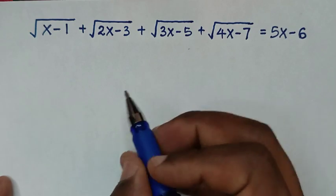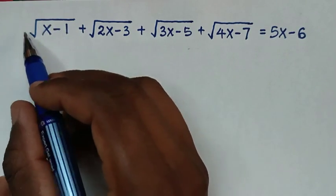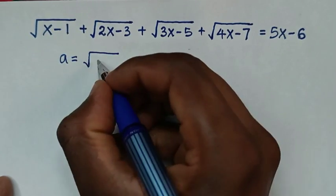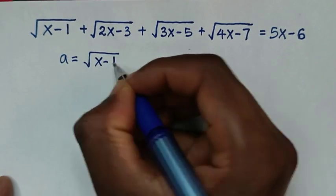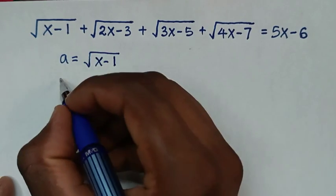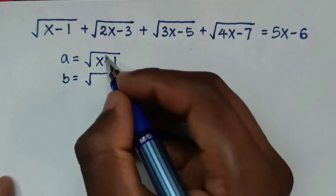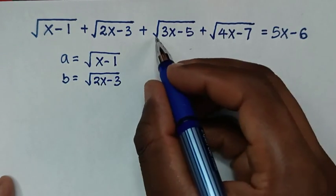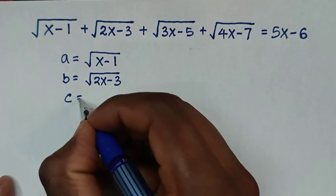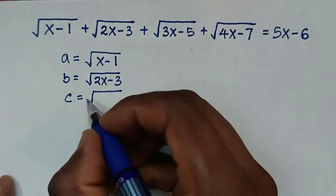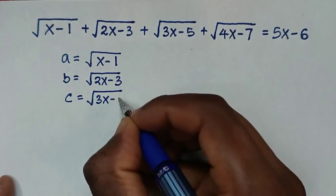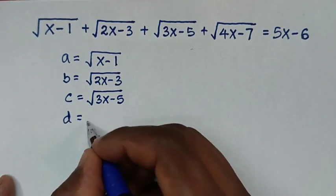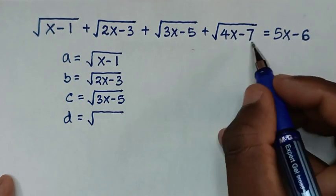In the first step, we will let this square root equal a, so a equals the square root of x minus 1. This square root we let equal b, so b equals the square root of 2x minus 3. This square root we let equal c, so c equals the square root of 3x minus 5. And this we let equal d, so d equals the square root of 4x minus 7.